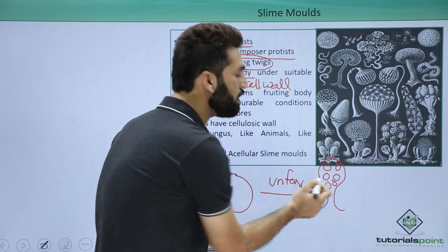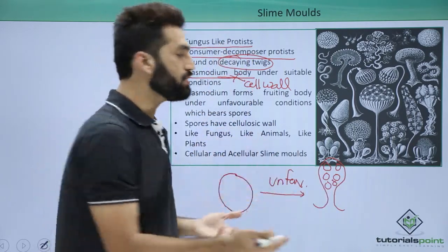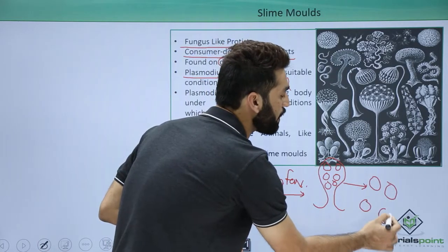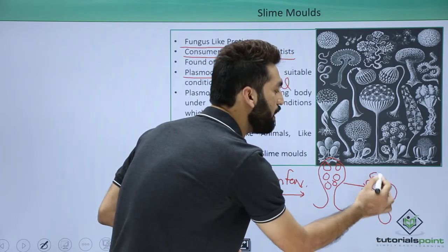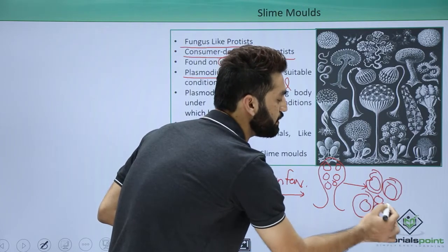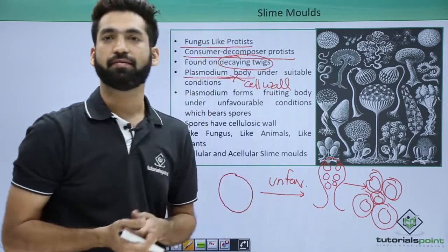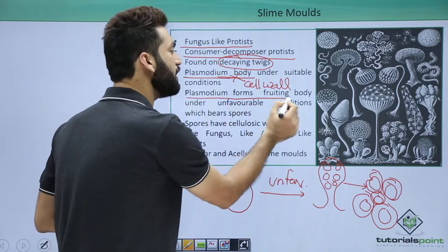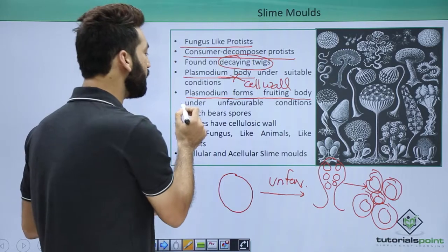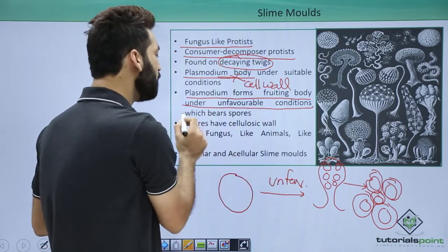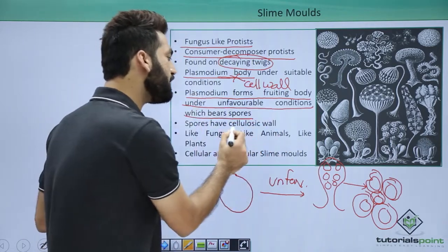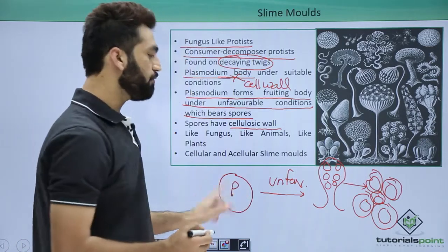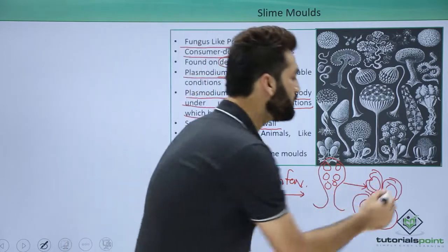During unfavorable conditions, the fruiting body forms a lot of spores. Due to air currents, the fruiting body bursts and these spores are released. The spores have a cell wall, and this cell wall around the spores is made up of cellulose. So the fluid plasmodium body forms the fruiting body under unfavorable conditions, which bears spores with a cellulosic wall.